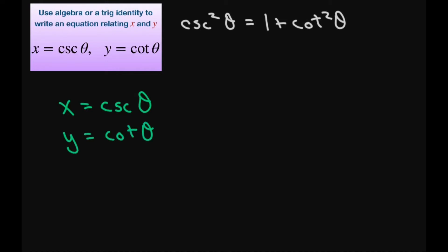So if you square both sides and now we can use substitution, cosecant squared of theta is just going to be X squared. Then we have 1 plus cotangent squared of theta is Y squared.